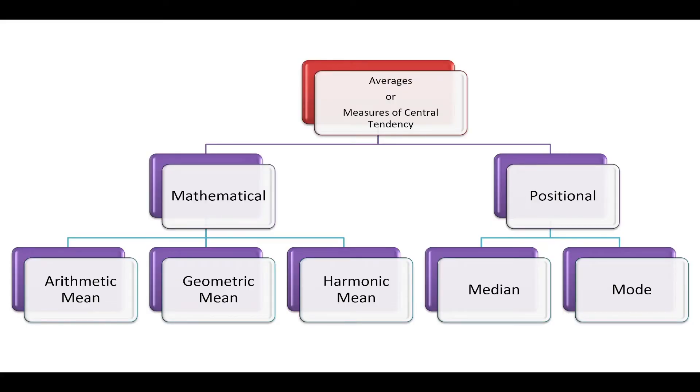In the previous video, we had seen that the five most commonly used averages or measures of central tendency are arithmetic mean, geometric mean, harmonic mean, median and mode. In today's video, we will see what is arithmetic mean.